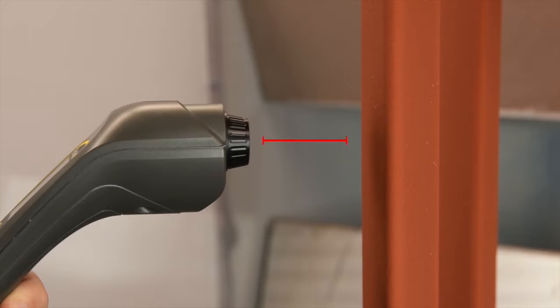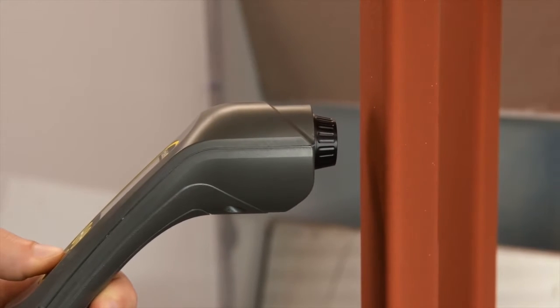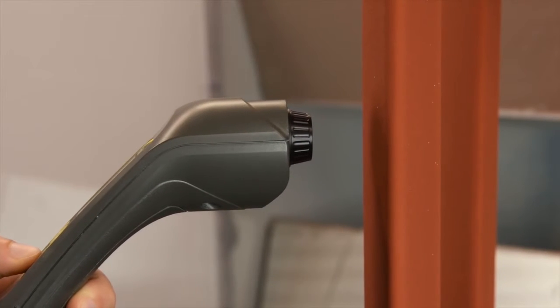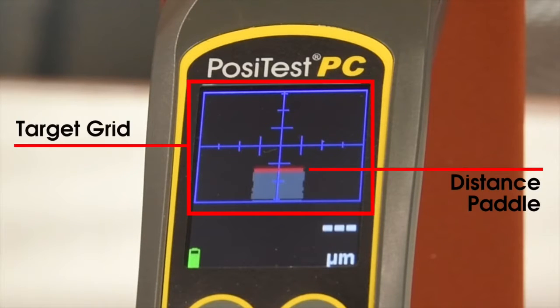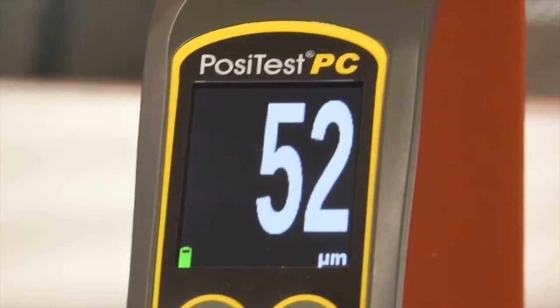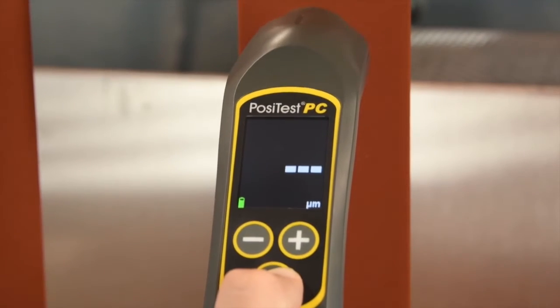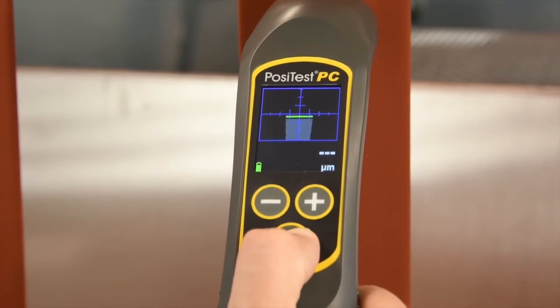To take a measurement, start with the tip of the instrument approximately two to three inches away from the part. Press and hold the check button and bring the tip closer to the part, ensuring it is perpendicular. When in range, a distance paddle will appear in the target grid, showing the instrument's distance from the part, with a horizontal line in the middle showing the target distance. The width of the paddle indicates how perpendicular the instrument is to the surface. Once the instrument is held perpendicular at the target distance, the distance paddle will turn green and a measurement is displayed.